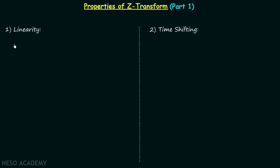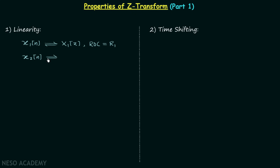To understand the linearity property, let's say there is a discrete time signal x1[n] and the corresponding Z-transform is X1(z) with region of convergence R1. On the other hand, we have another discrete time signal x2[n] with Z-transform X2(z) and region of convergence R2.